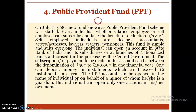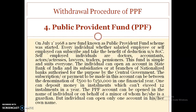This fund is simple and suits everyone. The individual can open an account in State Bank of India and its subsidiaries, or at branches of the national bank authorized for the purpose by the central government. The subscription to be made in this account can be between Rs. 500 to Rs. 1,50,000 in one financial year. Deposits can be made in instalments not exceeding 12 in a year. The PPF account can be opened in the name of an individual or on behalf of a minor of whom he or she is a guardian, but an individual can open only one account in his or her own name.